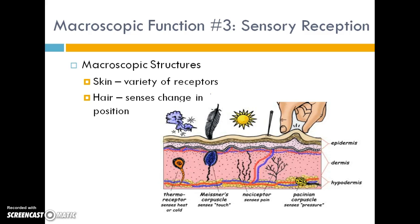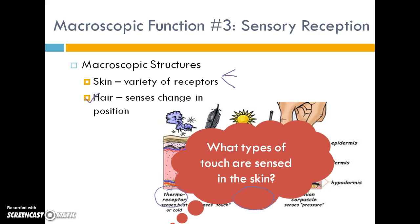The last macroscopic function is sensory reception. The skin has many different receptors for many types of senses. Hair has one major type of receptor located around its root — those nerves sense changes in position when your hair gets pulled. The skin itself offers thermal receptors for temperature, different receptors for different kinds of touch, and receptors for pain.